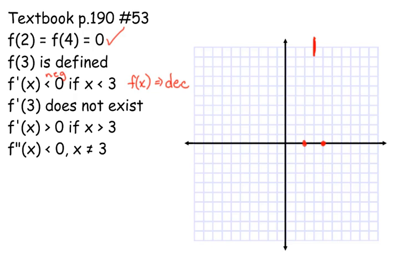Then it says f prime of 3 does not exist. Just a moment ago it told us f of 3 was defined, but f prime of 3 does not exist. What are two cases where our derivative does not exist when the function itself is defined? Sharp points and vertical tangent lines. So I'm still going to hold off on that one for a second to see if I get more information later. But I know I'm either going to have a sharp point or a vertical tangent line here — that's a point where your graph may differ from mine because you can make that choice.